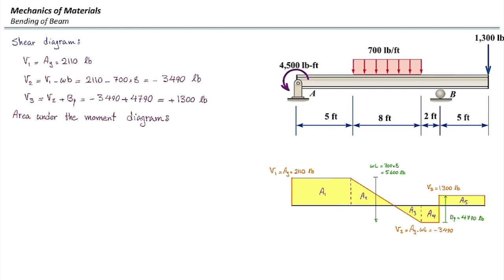I'm going to call them A1, A2, and so on to the end. Area 1 is a rectangle. The height of that is 2110 pounds. The length of that is 5 feet. So that would be 2110 multiplied by 5, and that would be 10,550 pound-feet.